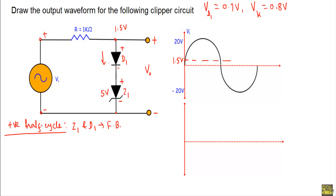As long as VI is less than 1.5V, we will not get sufficient voltage to put both diodes in forward bias. Although one of them may be in the on state, the other will be in the off state. As a result, none of them will conduct. So both Z1 and D1 will be in the off state.